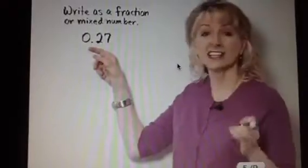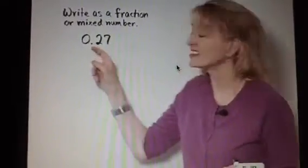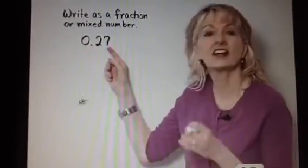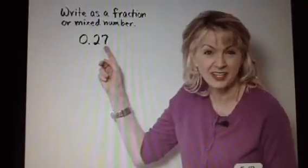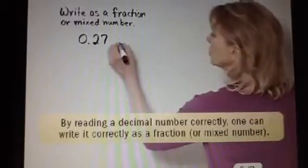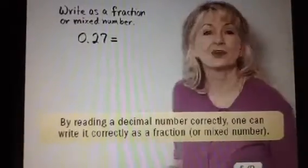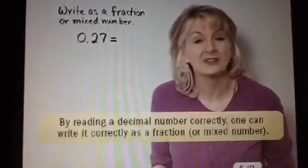Here I have, and let's read it correctly, this is 27 hundredths. 27 because this is in the hundredths place. So if I can read it correctly, I can write it correctly as an equivalent fraction.